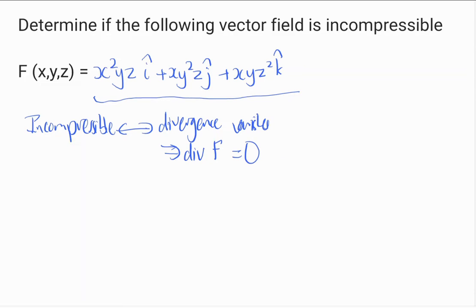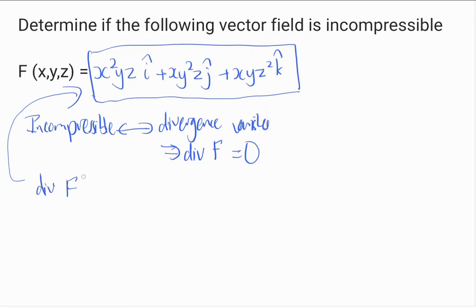Last week we actually worked on this vector equation. Based on our previous video, we learned that the divergence of F is equal to 6xyz. So this is not equal to zero.